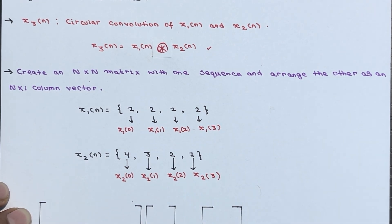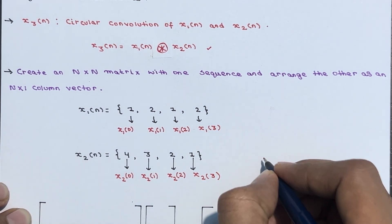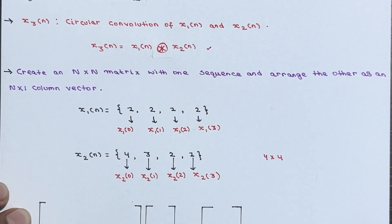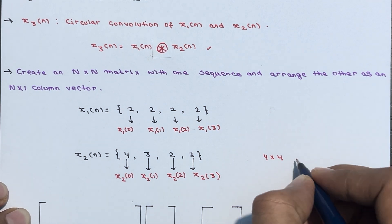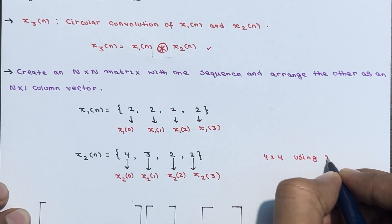To find the circular convolution using the matrix method, form an N×N matrix using the elements of x2[n]. Here the value of N is 4, so you have to form a 4×4 matrix using x2[n].